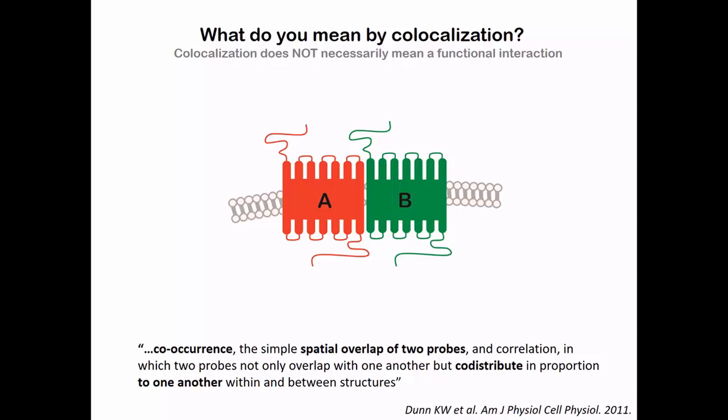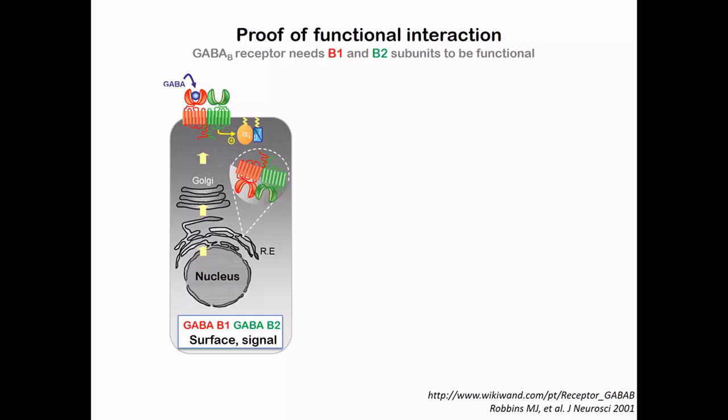Here I show two proteins — these are G-coupled protein receptors, or GPCRs. Those are proteins that have seven transmembrane domains with N and C terminal tails. Protein A in red and protein B in green are together — we can say they are co-localizing. However, we cannot say that they are interacting with each other unless we do signaling or proximity assays.